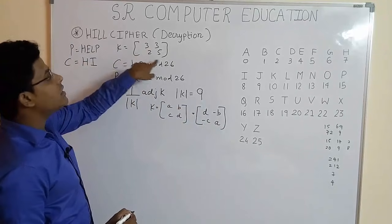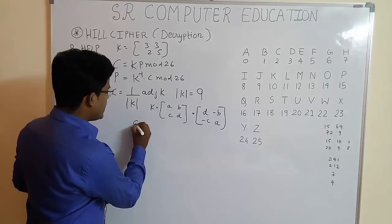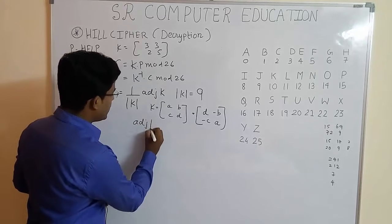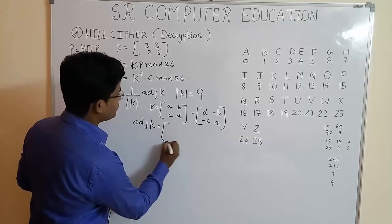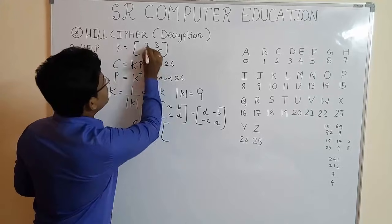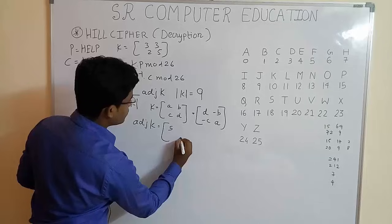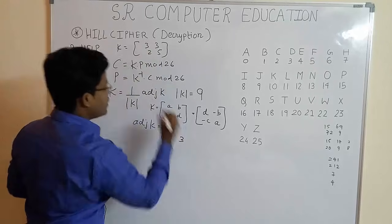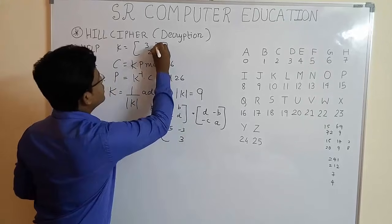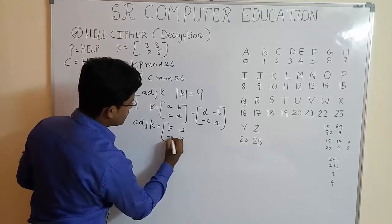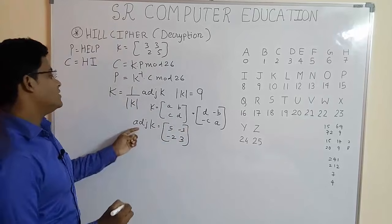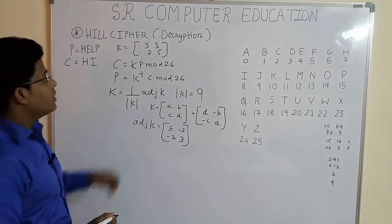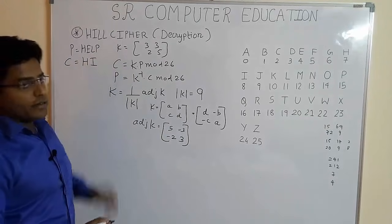So in our case, our matrix is [3, 3; 2, 5]. So following this formula, we get adjoint of K equal to, just change this position, [5, -3; -2, 3]. So this is the adjoint of the given key matrix.